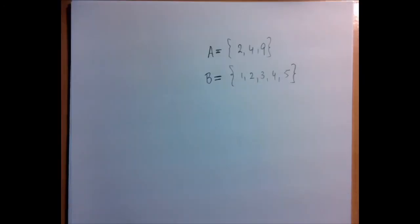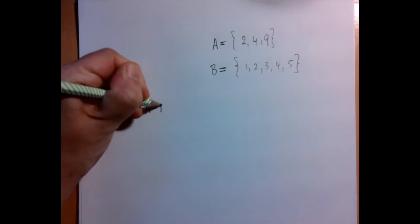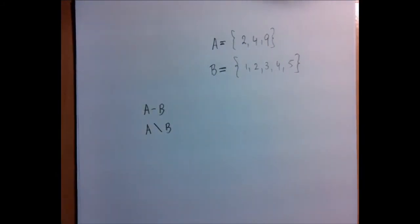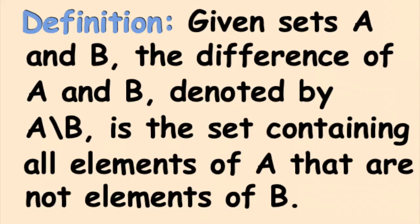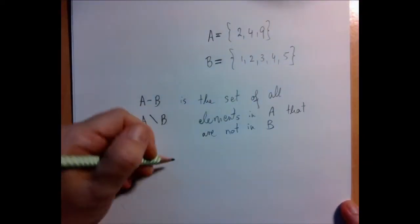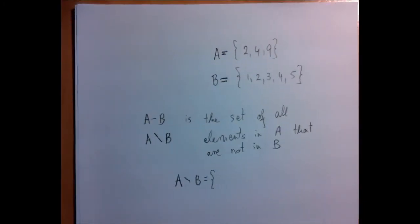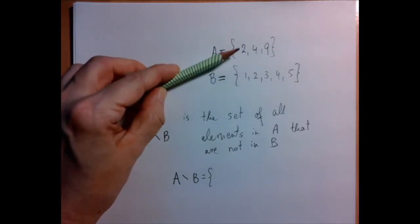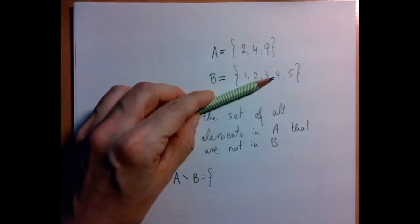Another operation I'd like to show you on sets is basically subtraction. Subtraction between sets is not like subtraction between numbers — you cannot get into the negative. The notations are this, but I think the more formal notation is this one. So A minus B is the set of all elements of A that are not in B. Even though B may have more elements, we can subtract B from A. A minus B: A has three elements, so we inspect one by one. We find all the elements in A that are not in B. Two is in B, four is in B, but nine isn't.